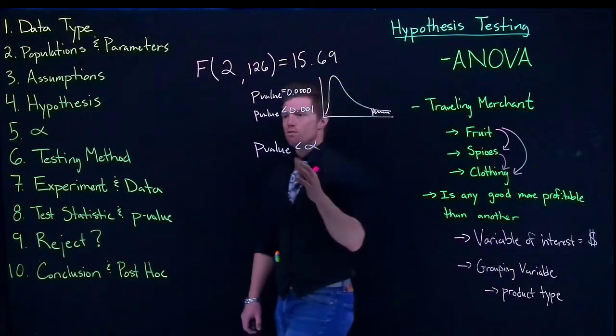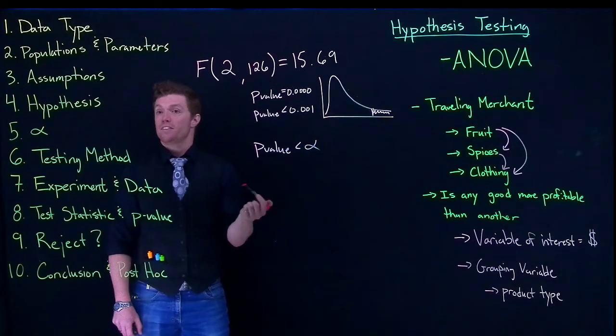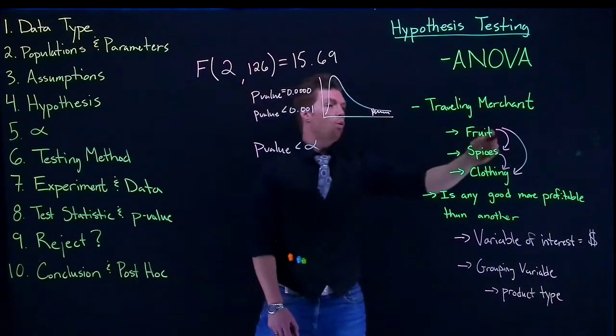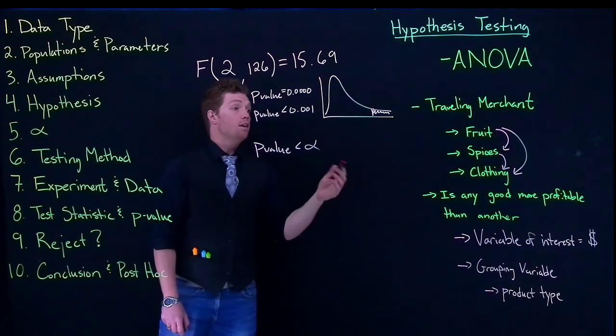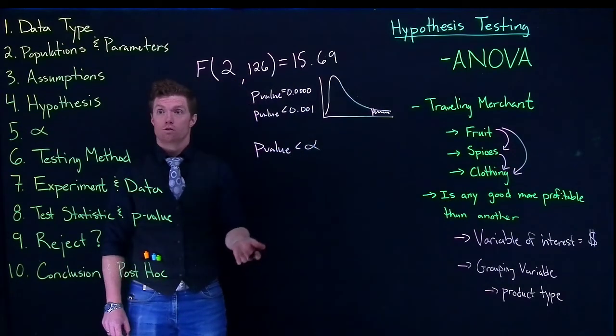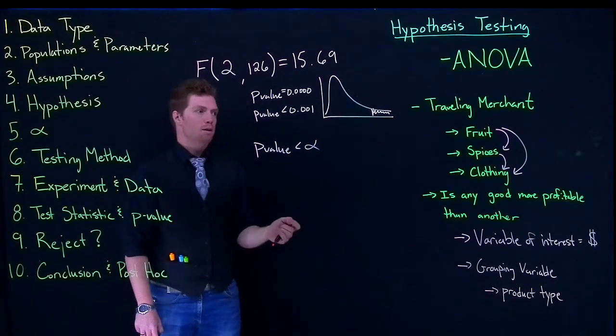So we actually have three separate comparisons that we're going to do. And for the null hypothesis to be rejected only one of these comparisons have to be shown to be different. Now if we have a whole bunch of groups we're going to have a whole bunch of pairwise comparisons.